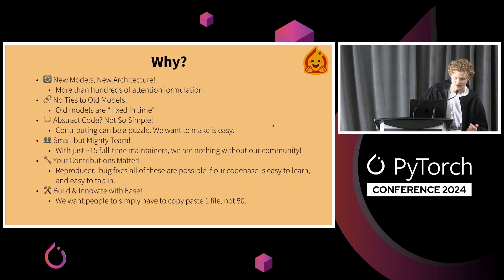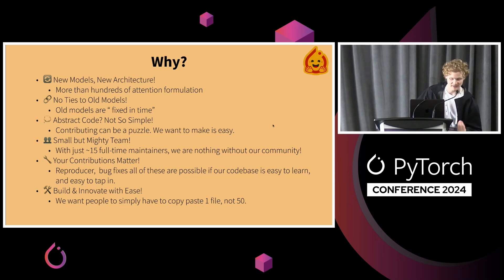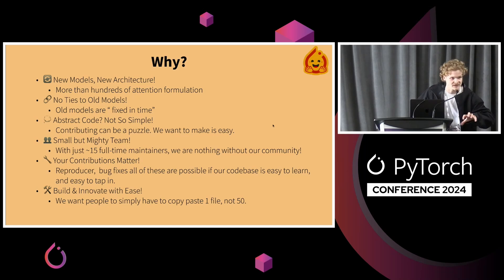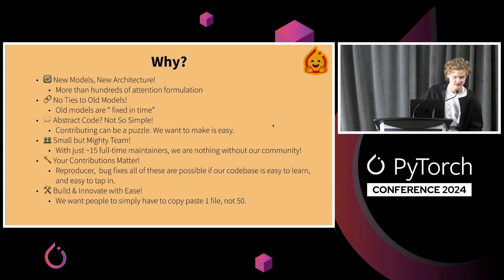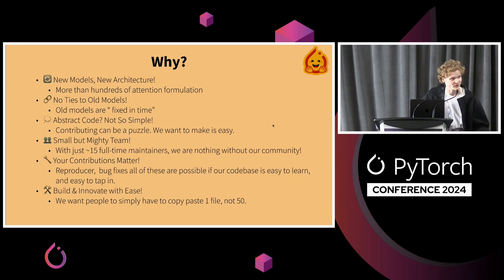That is super important because we don't want to add new features or new tricks — we want to make sure people can reproduce the results. Abstraction code is not very simple, and since we are very much contribution-centered, we rely on the community a lot and want to make sure people can easily contribute. We don't want it to be a puzzle. We have a small but mighty team of 15 maintainers for the entire ecosystem around Transformers, including PEFT, Tokenizers, TRL, and all libraries revolving around Transformers — that's not a lot of people.